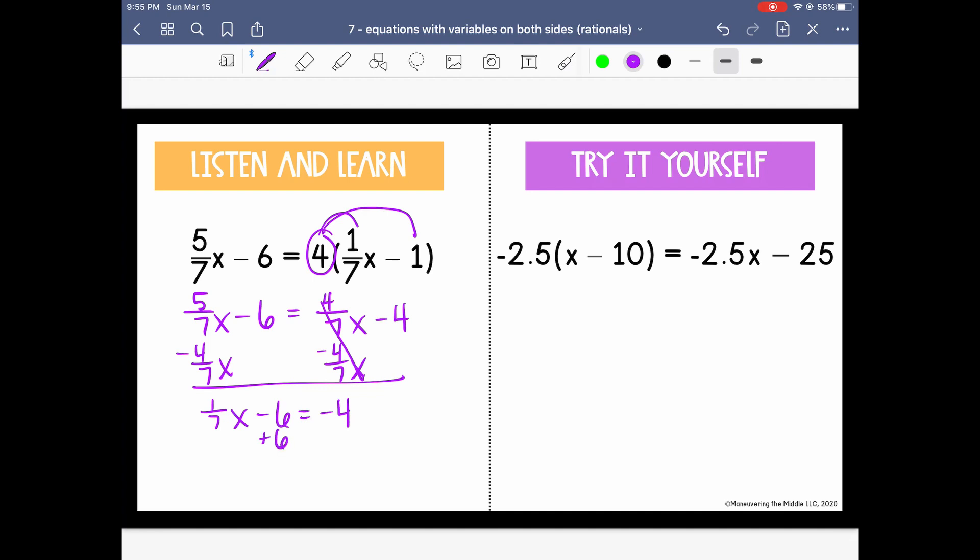We need to add 6 now to both sides. So 1/7 x equals 2, and then we need to divide by 1/7. So again, we're going to actually multiply by the reciprocal. The reciprocal of 1/7 is 7/1, or the whole number 7. So we know that x is 2 times 7, or 14.